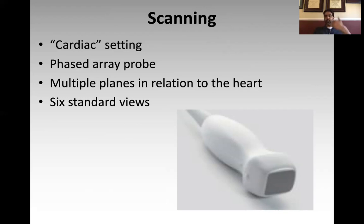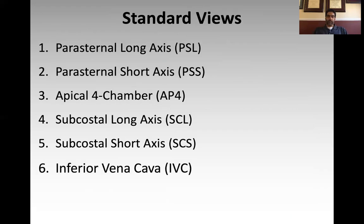Instead of using planes relative to the body — where long axis means the indicator points to the head and transverse means it points to patient right — in cardiac ultrasound, the long and short axis planes are relative to the axis of the heart itself. We use six standard views in the critical care cardiac assessment: parasternal long axis, parasternal short axis, apical four chamber, subcostal long axis, subcostal short axis, and the IVC view. We'll go through each of these in detail.